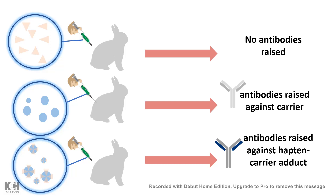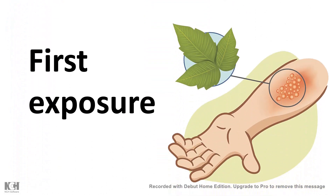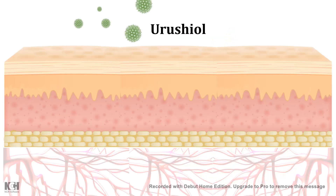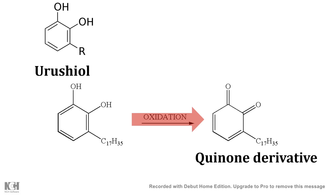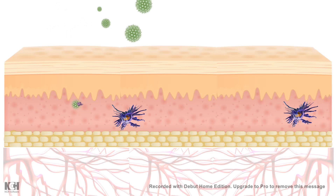An immune response is generated only when hapten is conjugated and forms an adduct. A live example is contact dermatitis caused by poison ivy. When poison ivy touches your skin, an active molecule known as urushiol enters. Urushiol is a benzene derivative — quite simple in structure. Inside the skin, urushiol in its alcoholic form gets oxidized to form a quinone derivative, which is highly reactive. This quinone derivative then interacts with endogenous skin proteins to form a hapten adduct.